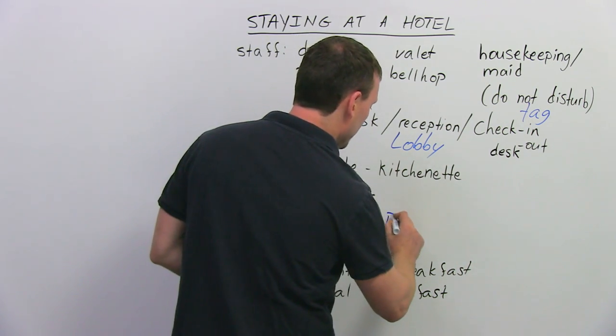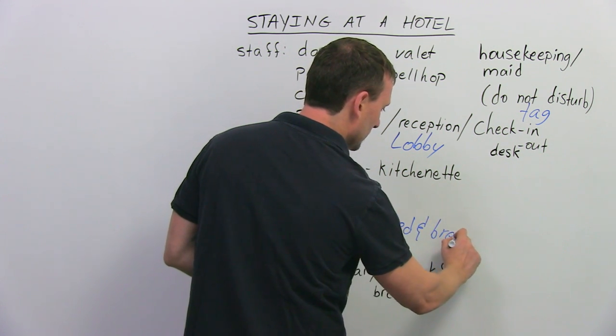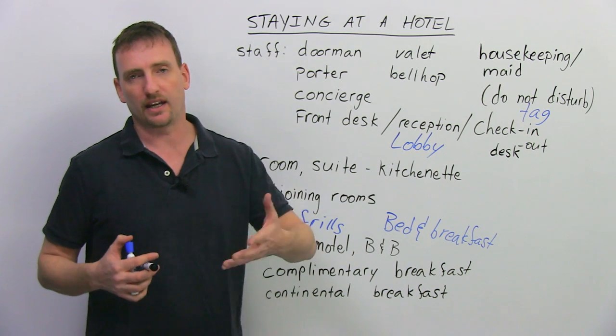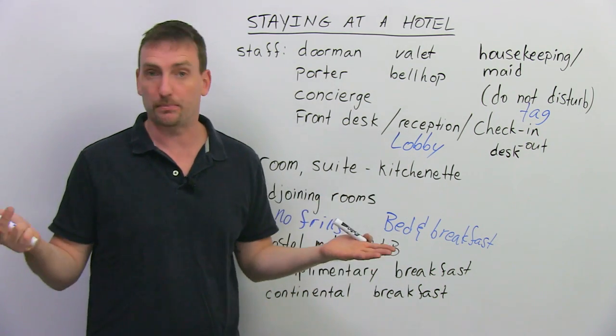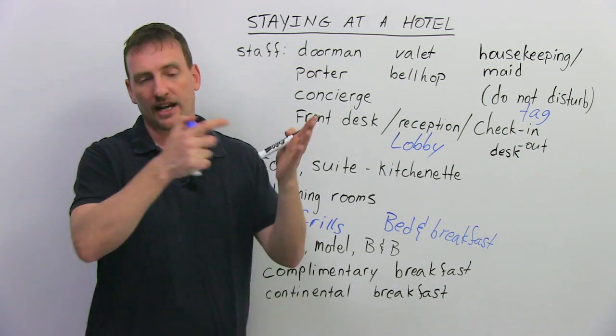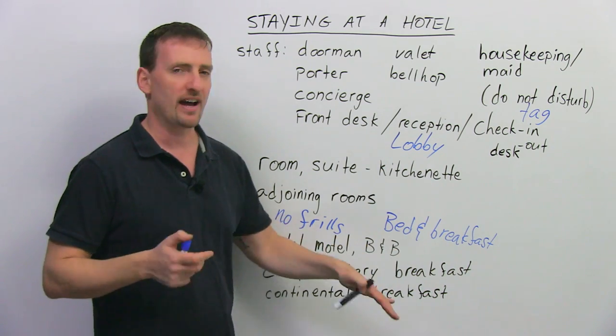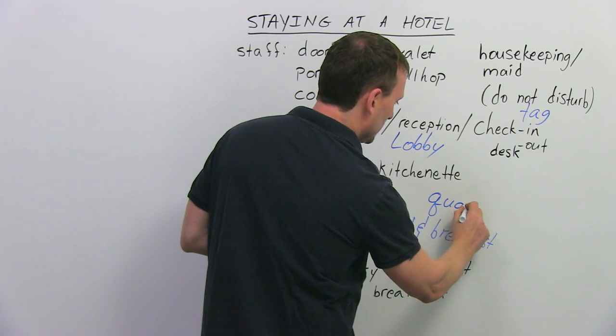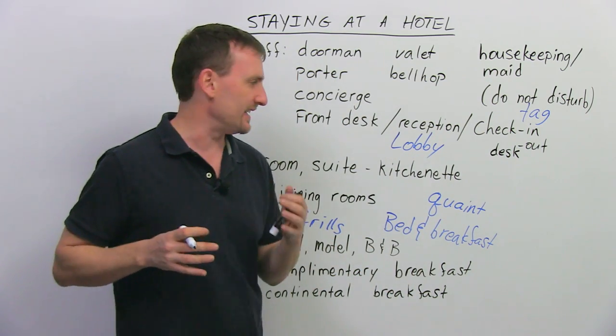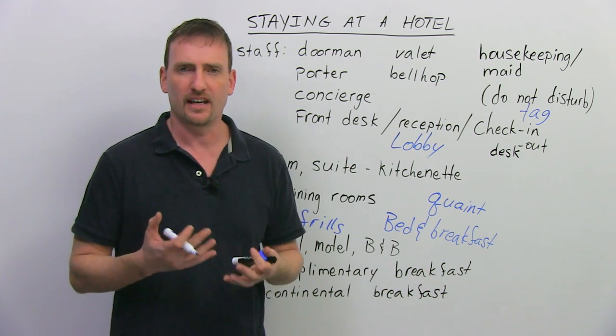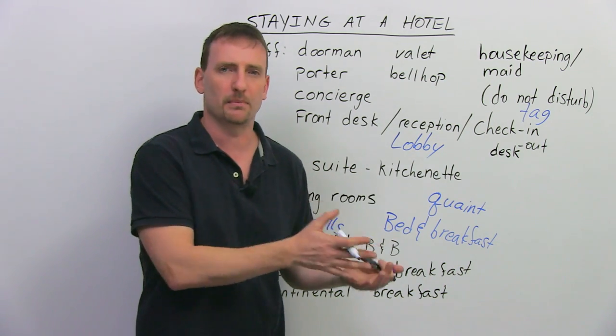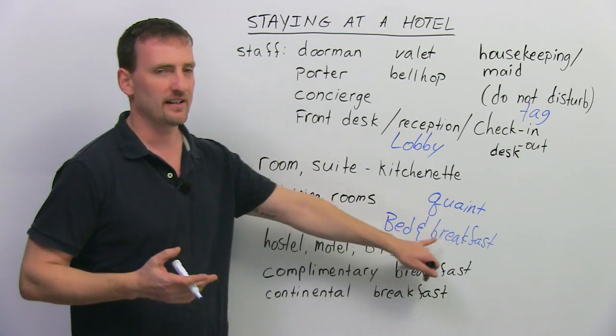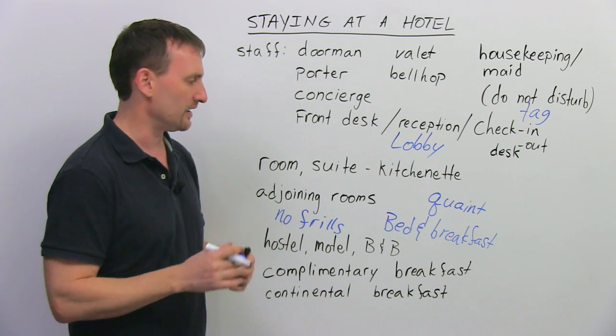B&B is basically bed and breakfast. Usually, this is a person's home or a couple's home that they let out to people to stay in. I have a house, a big house, I have four or five bedrooms, and I rent those bedrooms out to people who want to spend the night. Usually, you'll find them in small towns, it's a little bit more quaint. Quaint means it's a little bit special and friendly and nice, and you get a little bit of a different and more personal experience. You feel like you're at home, except that you're in somebody else's home and they're taking care of you. And they will offer you breakfast.